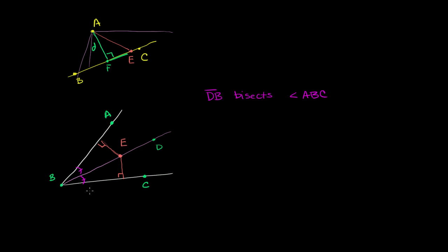The first thing to realize is that we have two right triangles. They both have this same angle — angle ABE is congruent to angle CBE — and we know that because DB bisects it. So this angle is equal to that angle.